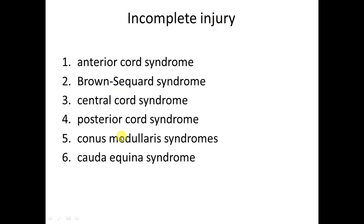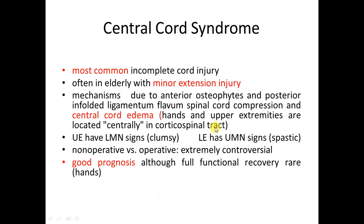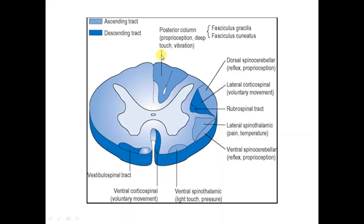Incomplete spinal cord injury has six forms based on anatomy. The posterior column carries proprioception. The lateral corticospinal and lateral spinothalamic tracts are in the lateral cord; the anterior corticospinal and anterior spinothalamic tracts are in the anterior cord. Corticospinal tracts carry motor, spinothalamic tracts carry pain. Affection of the posterior column causes loss of proprioception; affection of lateral or anterior tracts causes loss of motor and sensation.